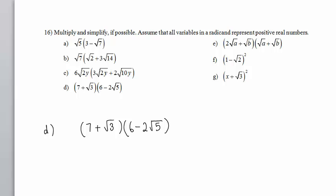We can use the FOIL method to multiply here. 7 times 6, the F, the first of FOIL, that gives us 42.